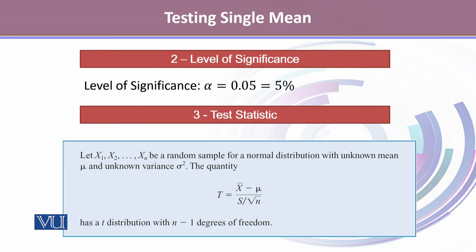If x1 up to xn is a random sample from a normal distribution with unknown mean and unknown variance, then the quantity t equals x-bar minus mu, divided by s over root n, follows a t-distribution with n minus 1 degrees of freedom.